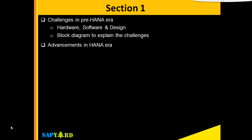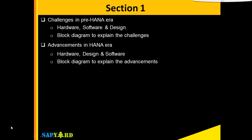Then we will look into what were the advancements in the HANA era — how did we change the hardware, software and design issues which were there earlier. We will also see it with the help of a diagram that will give us a better picture.